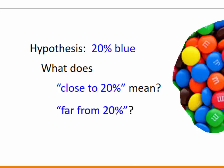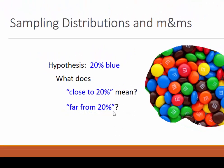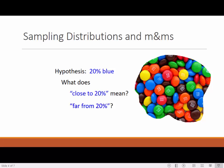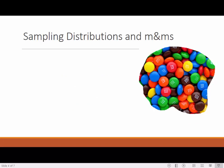Just as when working with random events in probability, we need many, many simulations to help us learn what to expect. Then we will know what kinds of samples are typical and what are unusual, and we'll be able to judge whether or not to be surprised by a particular sample — our sample. The tool we will use is called a sampling distribution.